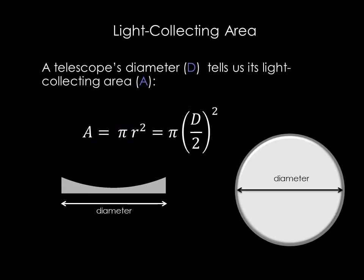A telescope's light collecting area tells us how much total light it can collect at one time. Telescopes are generally round, so we usually characterize a telescope's size by the diameter of its light collecting surface. You may recall that the area of a circle is equal to π times the radius squared.